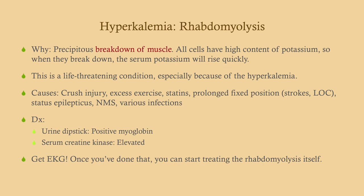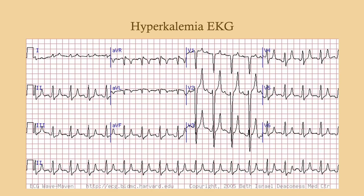Rhabdomyolysis is a big deal — it's caused by breakdown of muscle. Causes include crush injury, excess exercise, statins, seizures, and neuroleptic malignant syndrome. This is life-threatening because the resulting hyperkalemia can be quite profound and precipitate an arrhythmia. For diagnosis, if you suspect rhabdo, get a urine dipstick — it will show myoglobin in the urine, looking like blood, but microscopy will not show red blood cells because it's myoglobin, not hemoglobin. Serum creatine kinase will be elevated. Make sure to get an EKG.